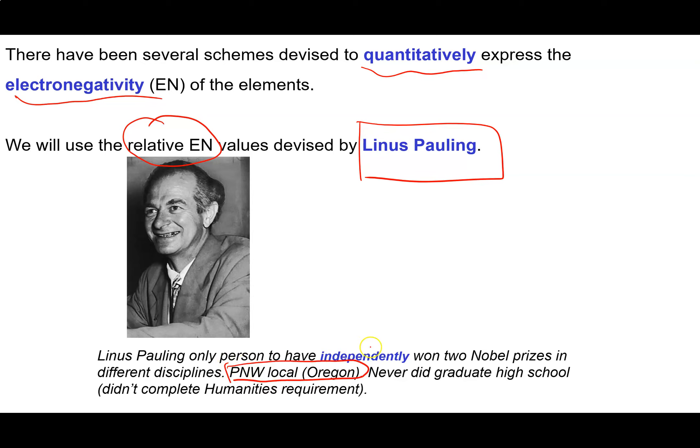And he's the only person to have won two Nobel Prizes by himself in two completely different disciplines. So he won the Nobel Prize for Peace and he won the Nobel Prize for Chemistry.